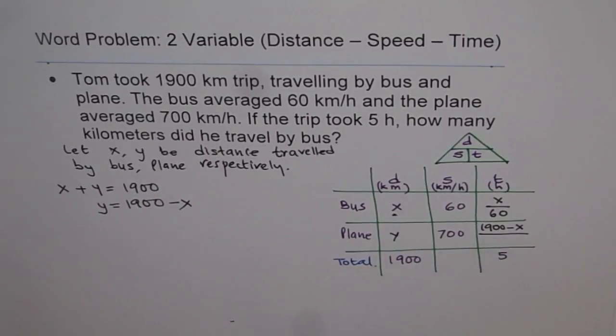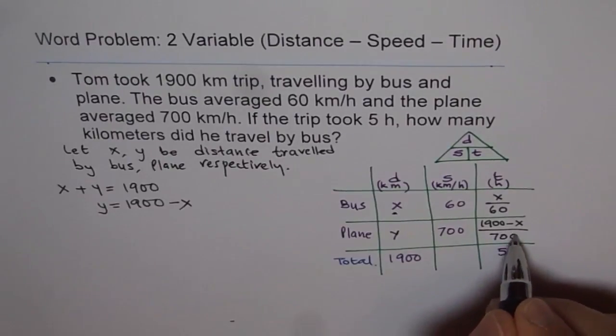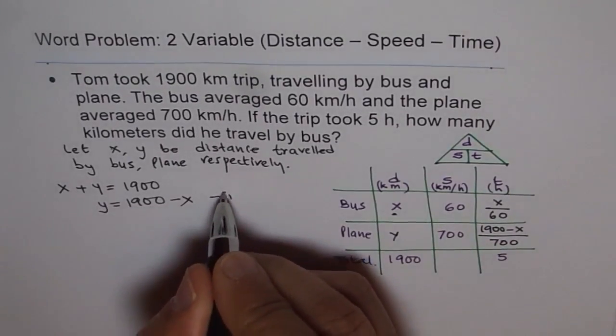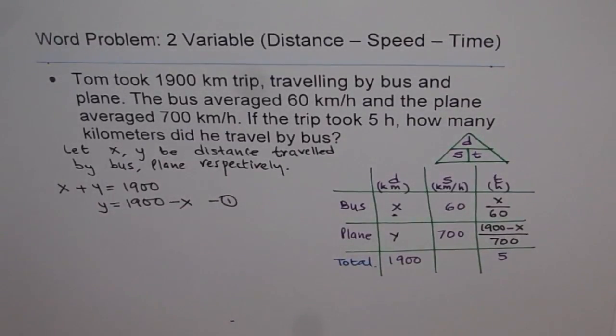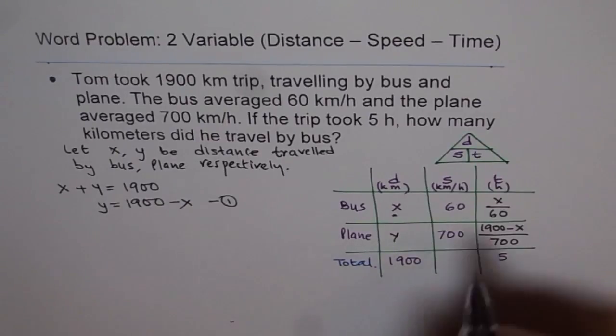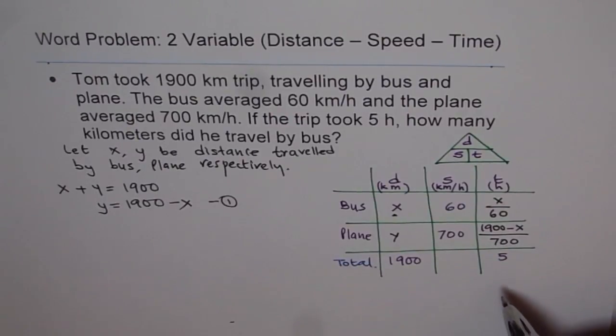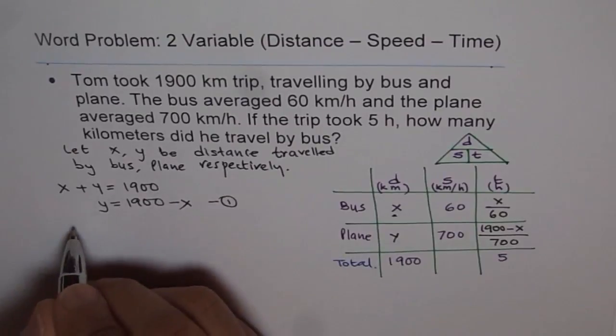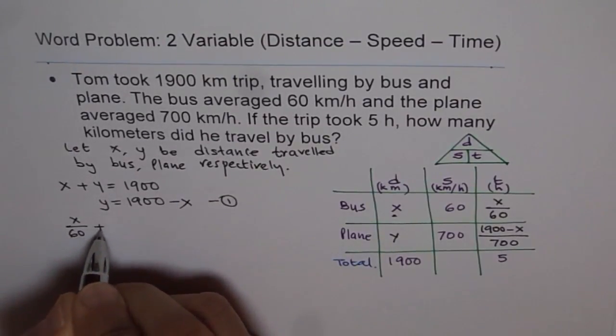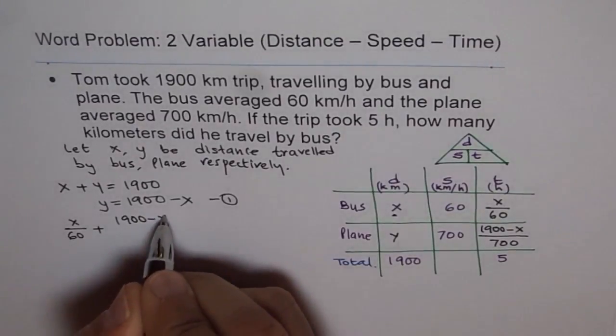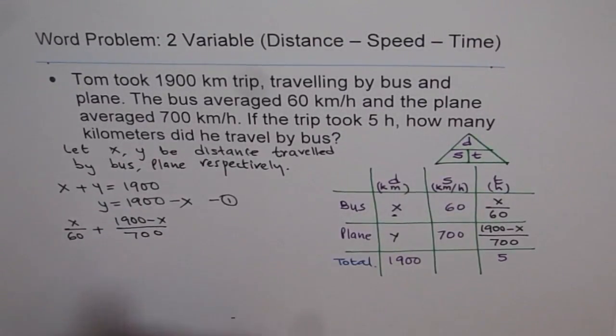We have used equation 1 here to relate distance traveled by plane with distance traveled by bus. Now you notice, if you add these two times, you should get 5 hours, since the total time taken is 5 hours for the trip of 1900 kilometers. So we get our equation, which is X over 60 plus 1900 minus X over 700, and that should be equals to 5.